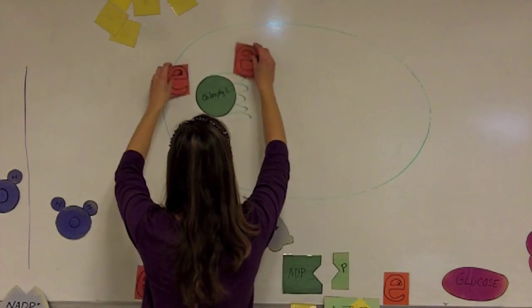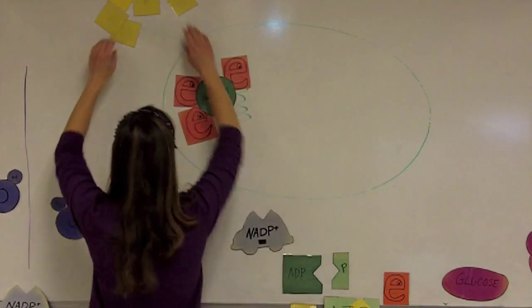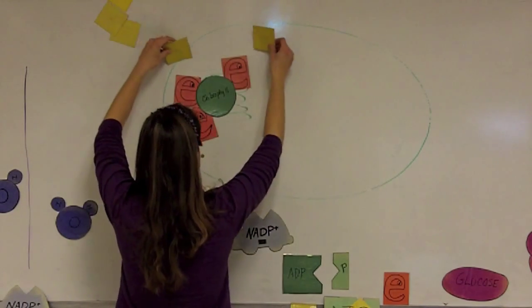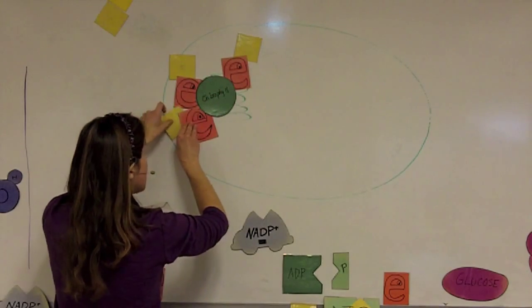Inside that chlorophyll are electrons. As the sun hits the chlorophyll, the energy from sunlight is absorbed by these electrons and they become high energy electrons.